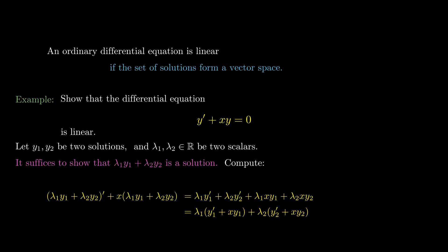Since both y₁ and y₂ are solutions, we have λ₁ times 0 plus λ₂ times 0, so we must have the result being zero. This completes the proof.